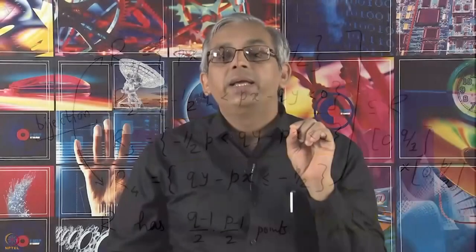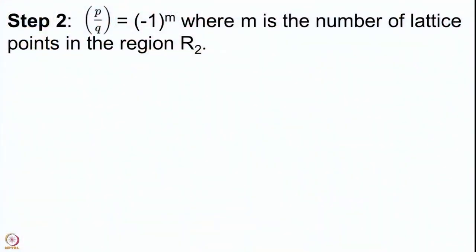Now we go to the part R2. Note carefully: it is defined by p·x − q·y being between −q/2 and 0. This is the part of the rectangle we are looking at, and we connect it with the quadratic residue symbol (p/q). This is the second step where we say that (p/q) = (−1)^m, where m is the number of lattice points in the region R2, and we are going to use Gauss Lemma.